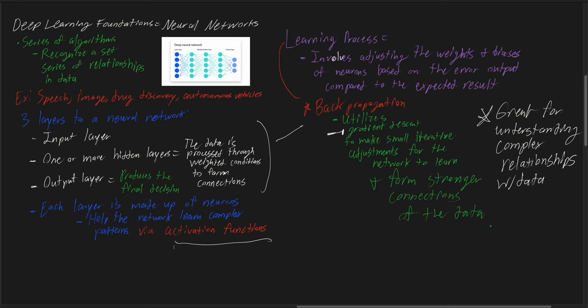Overall, neural networks are great for understanding complex relationships with data, and there are many different iterative examples and processes that could be applied within neural networks. Now let's head over to our concept example.